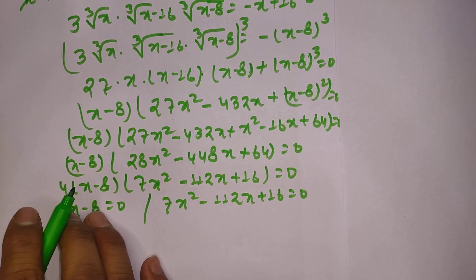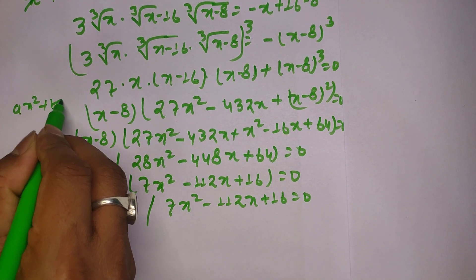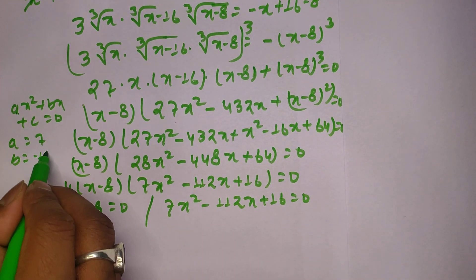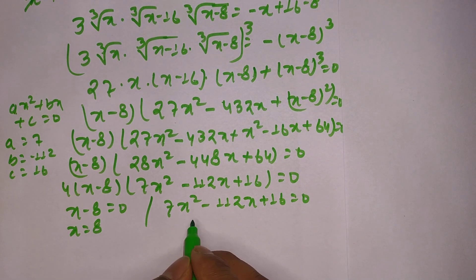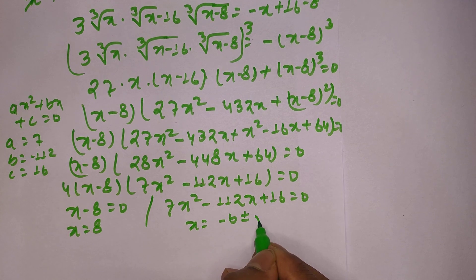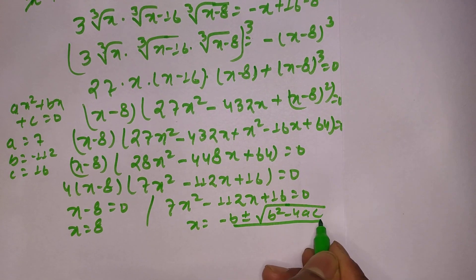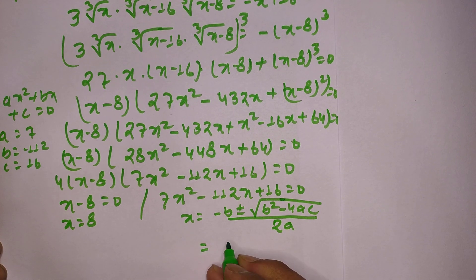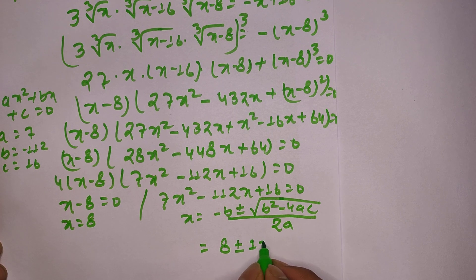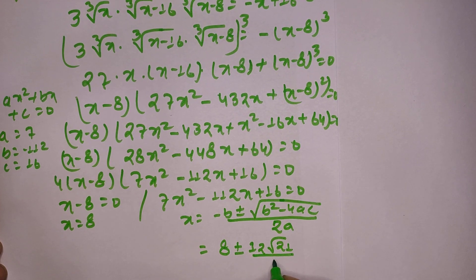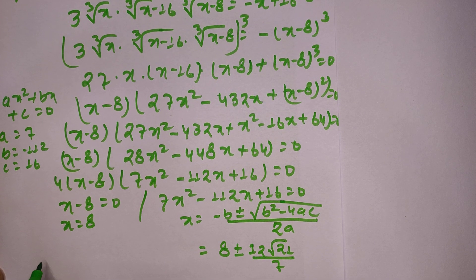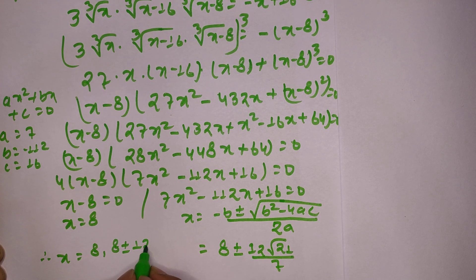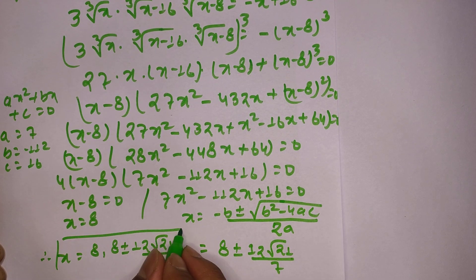Comparing 7x² minus 112x plus 16 with ax² plus bx plus c equals 0, we get a equals 7, b equals minus 112, and c equals 16. Using the quadratic formula x equals minus b plus or minus square root of b² minus 4ac, divided by 2a, and substituting the values, we get x equals (112 plus or minus 12 square root of 21) divided by 7. So the final answers are x equals 8 and x equals (112 ± 12√21) / 7 — a total of 3 values of x.